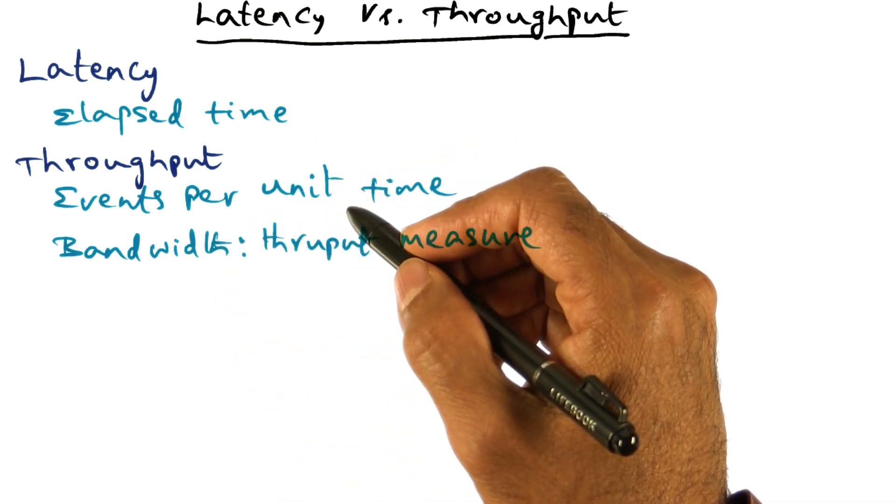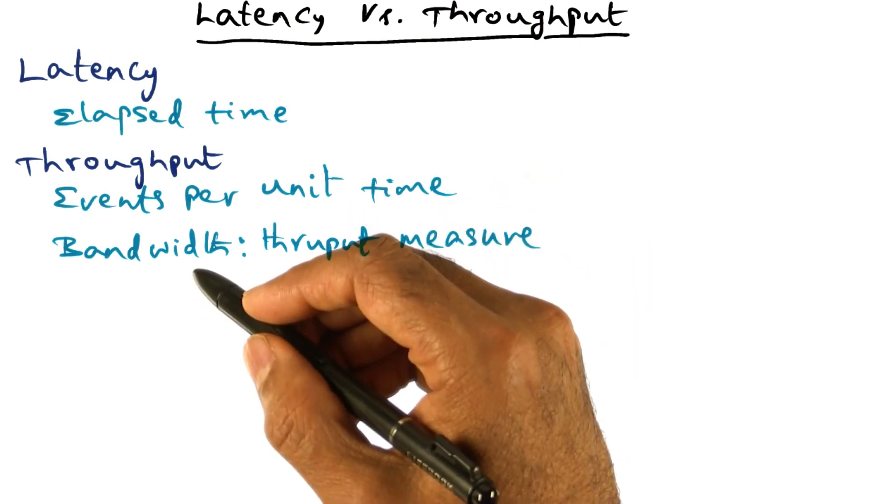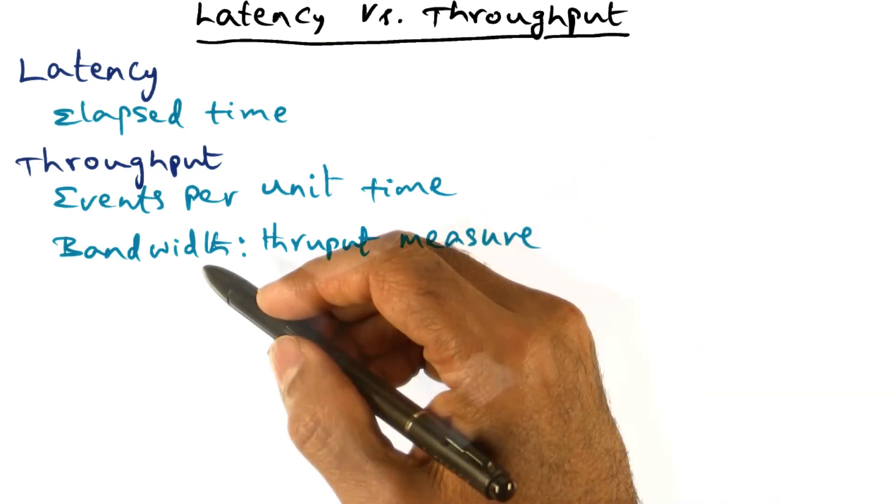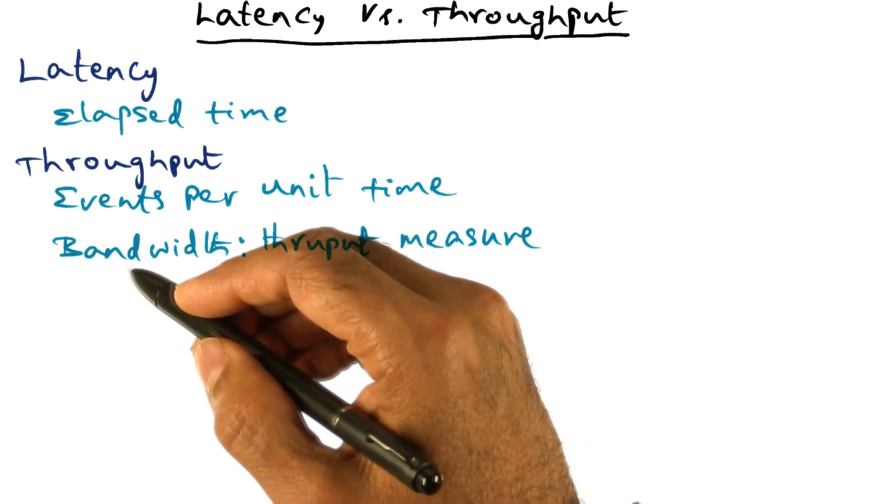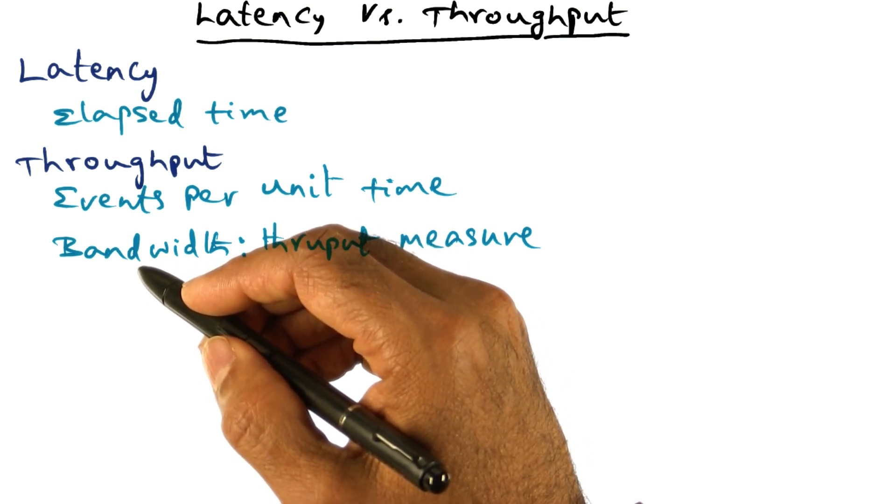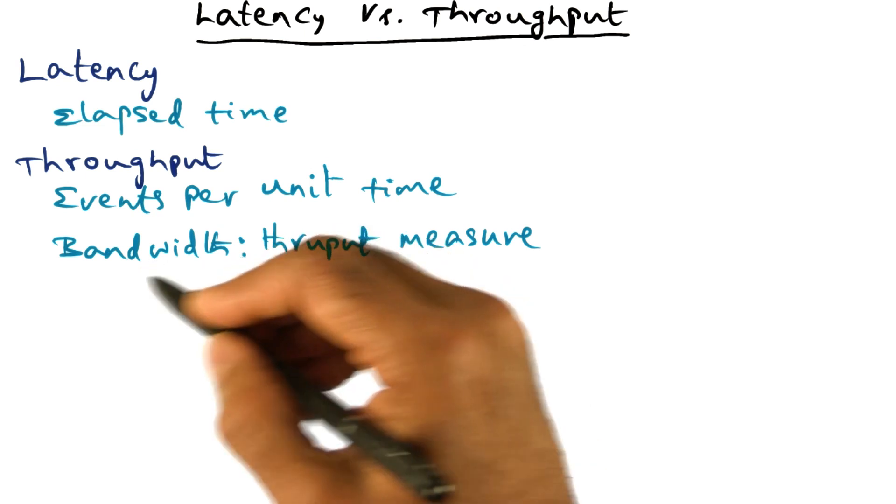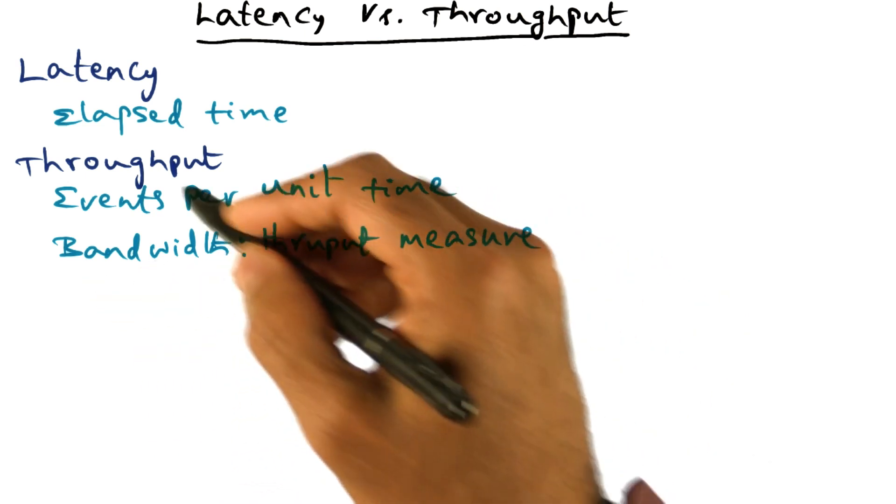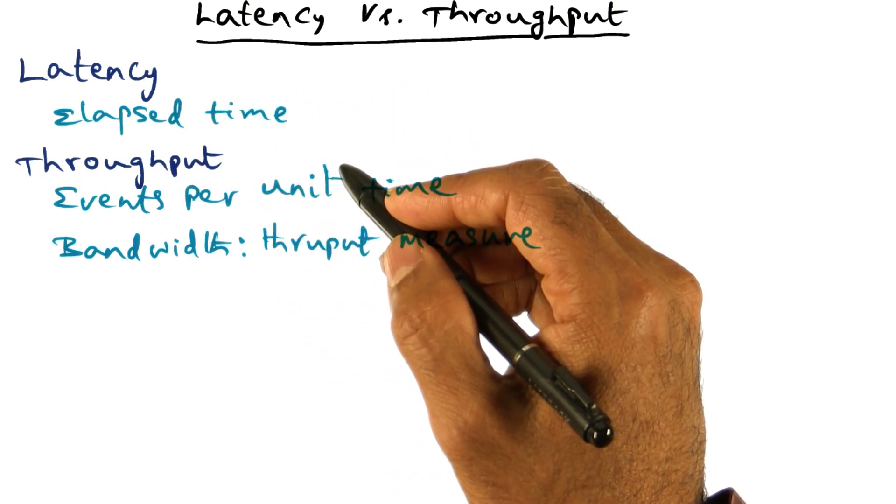Throughput is the number of events that can be executed per unit time. Bandwidth is a measure of throughput. Once again with this analogy of walking to the classroom from my office, if the hallway is wide enough to allow five, ten of us to walk in parallel, side by side to the classroom, it increases the throughput. But it does nothing to the latency. The latency is going to be determined by how fast I can walk from my office to the classroom.